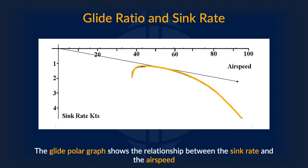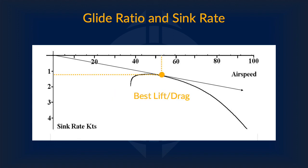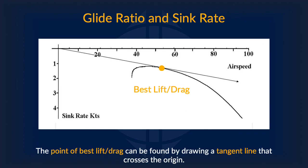This is interesting as you can figure out the minimum and most efficient flying speed given information about the sink rate. This is a glide polar graph, which shows the relationship between the sink rate and the airspeed. At the leftmost part of the curve is the minimum flying speed — any lower and you'll stall because you're not generating enough lift. The point of lowest sink rate is where flying gives you the most horizontal distance for a given amount of altitude change. The point of best lift-to-drag ratio can be found by drawing a tangent line that crosses the origin — this is the speed at which you get the best or highest ratio of lift to drag.